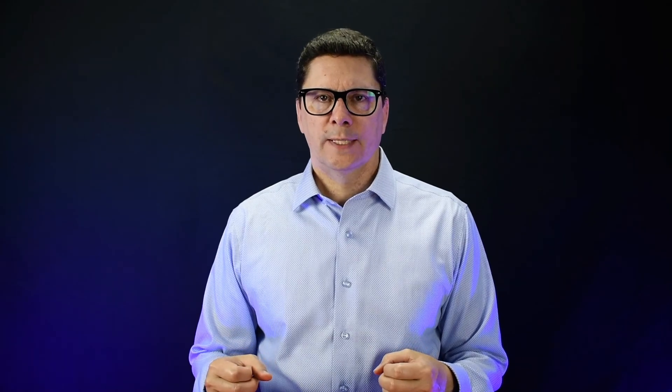Sometimes there are co-first authors — this is when two people made an equal contribution to the work being published. There's typically an asterisk by their names stating that these two people contributed equally. However, on the paper somebody's name is still going to be listed first, so it's important to discuss whose name will be listed first even in the case of co-first authors.